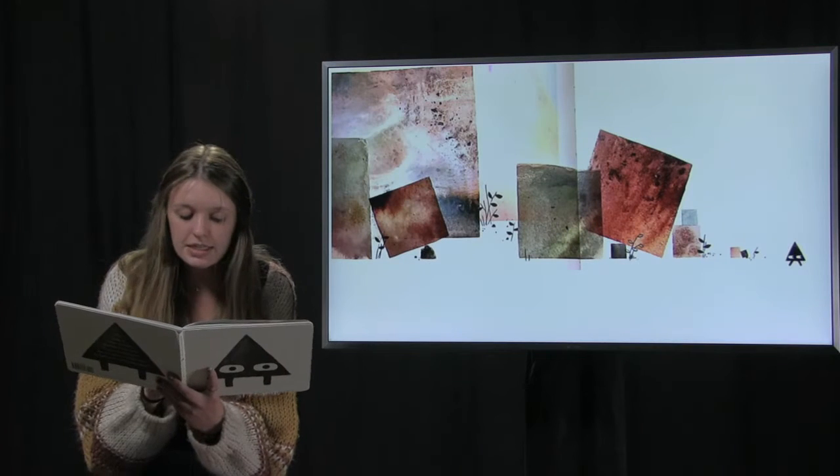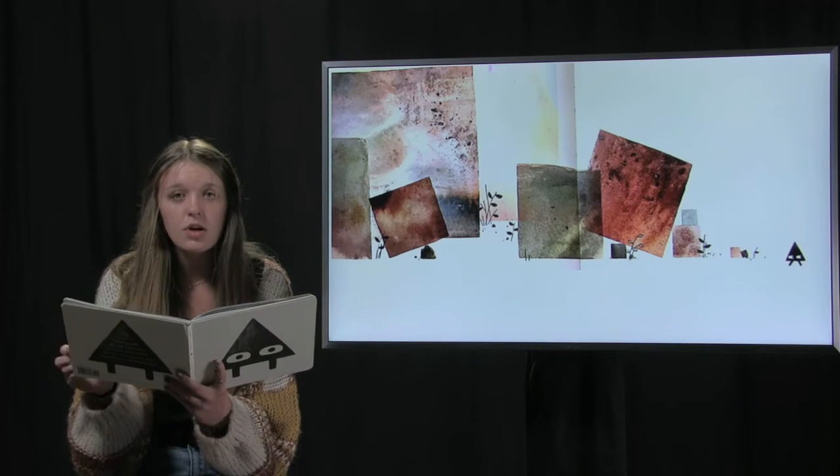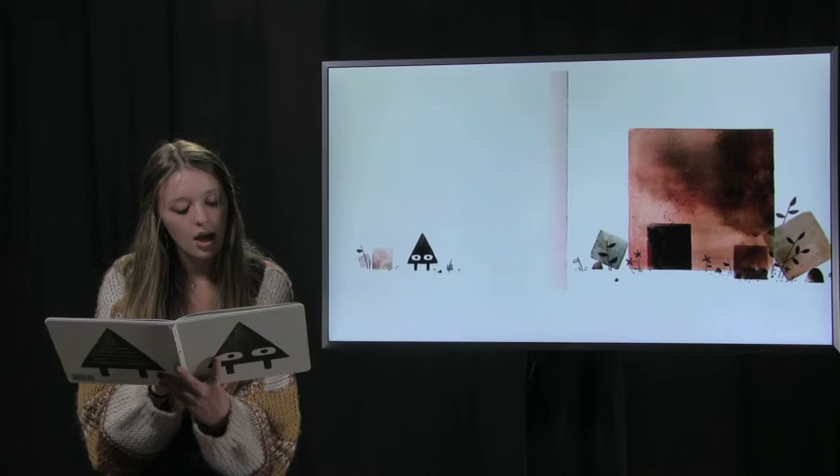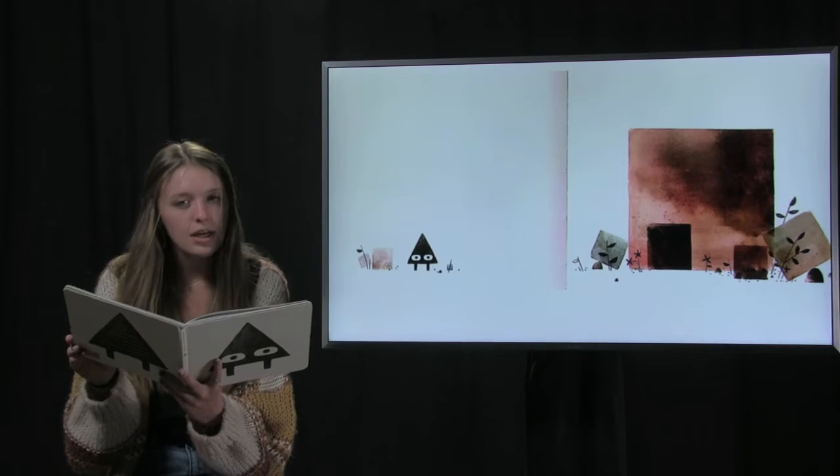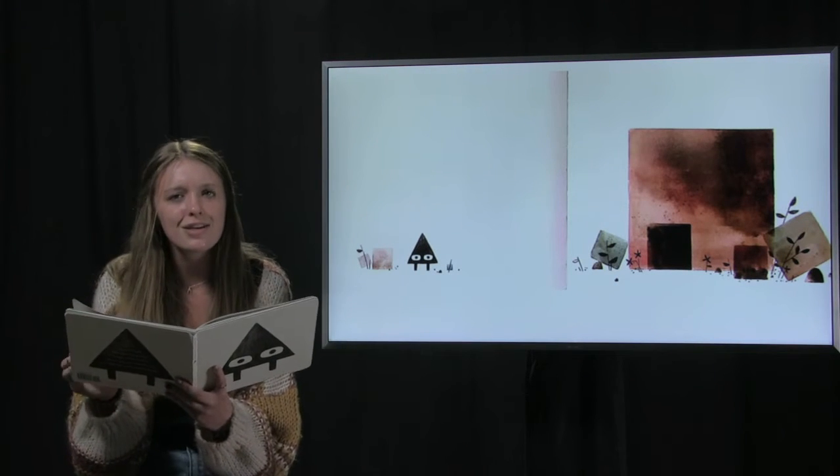He walked until he got to a place where there were squares. Still thinking of his sneaky trick, he walked past big squares and medium squares and small squares until he got to Square's house. Now, said Triangle, I will play my sneaky trick.